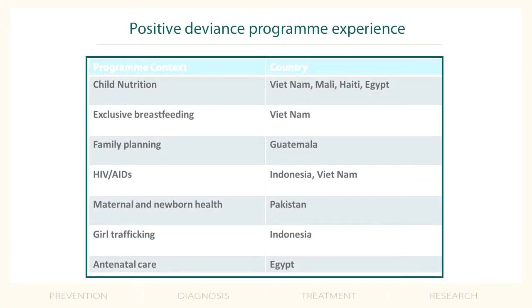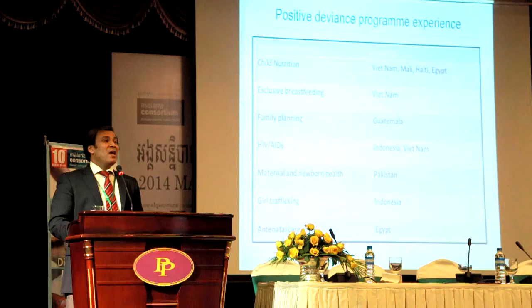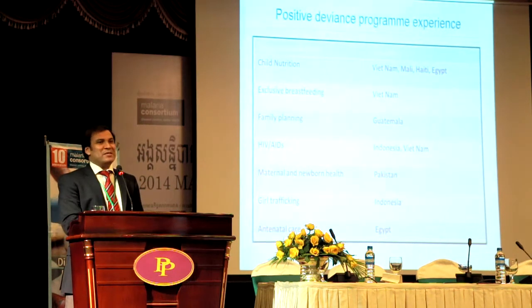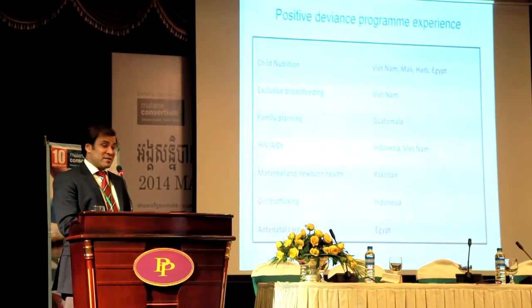The PD concept came from nutrition literature. It has been applied on nutrition by Monique and Jerry Sternen from the Positive Deviance Initiative, and this model has been replicated in more than 40 countries. After the big success in nutrition, it has been tried out on different health and social issues. Malaria Consortium is the first organization trying it out on malaria and dengue in the region.